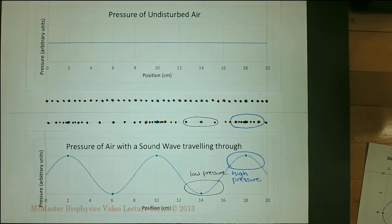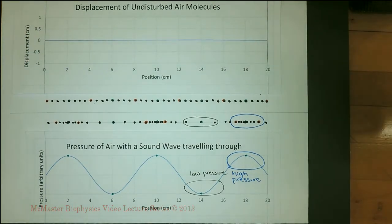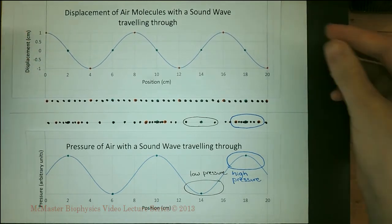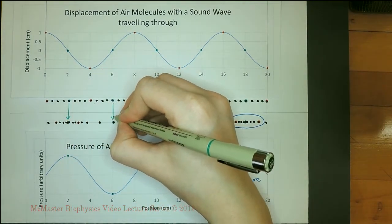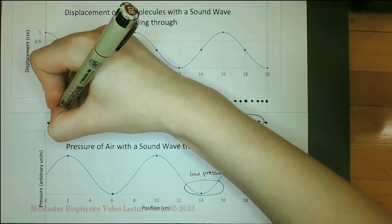The same molecules are present before and during the time when a sound wave passes through. However, the molecules are displaced from their original positions. One graph shows the displacement of the undisturbed molecules — their displacement is zero. Another graph shows the displacement of the molecules when a sound wave travels through them. The air molecules are displaced in the x direction, the same direction that the wave travels in, which is a quality of a longitudinal wave. The graphs of pressure and displacement differ by a phase shift of pi over 2. In the center of an area of expansion or compression, shown by the green dots, the displacement from original positions is zero. Between areas of expansion and compression, the displacement of the dots is at a maximum, shown by the red dots.